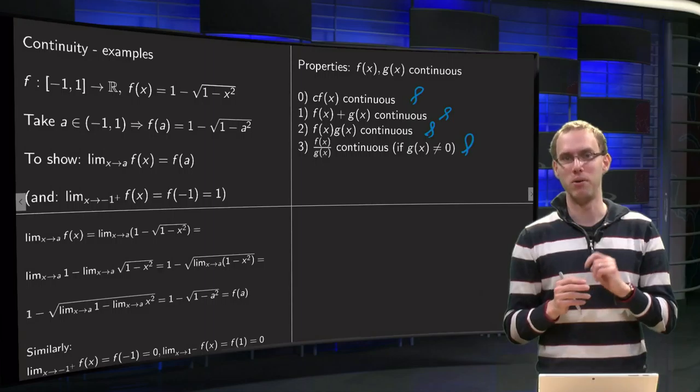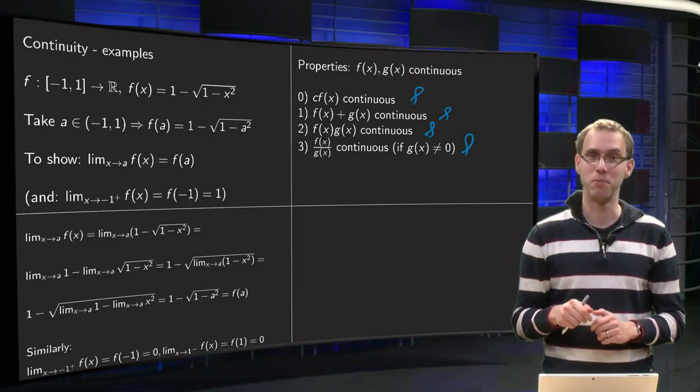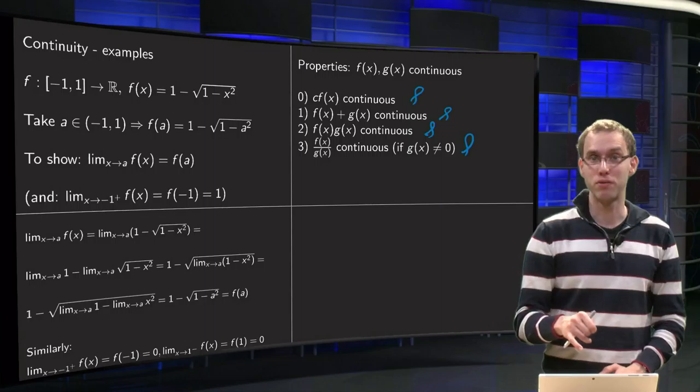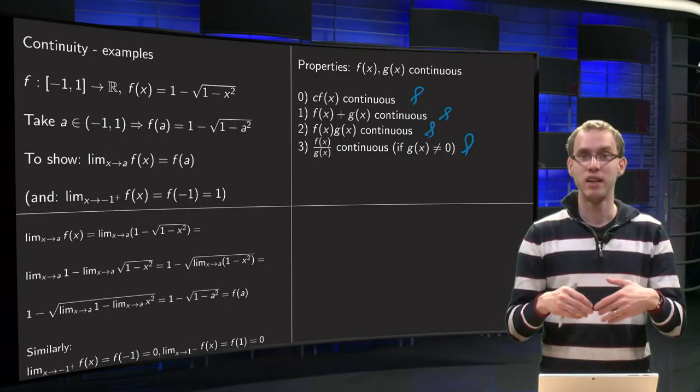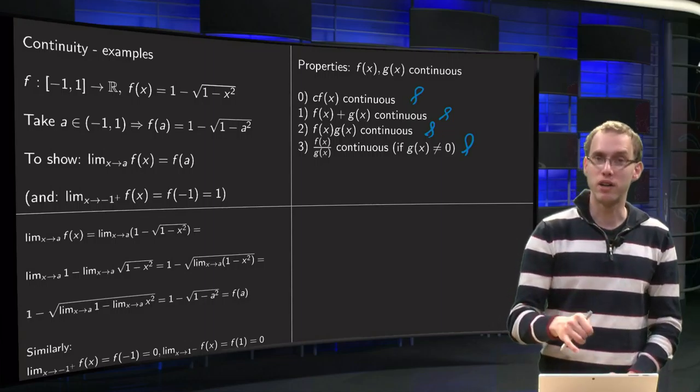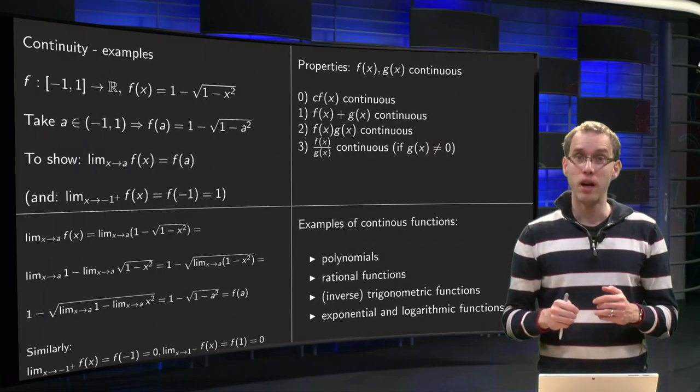We inherit the product rule: if f and g are continuous, then the product f times g is continuous. And we inherit the quotient rule also from our limits: if f and g are continuous, then the quotient is also continuous at points where g is not equal to 0. That is why you have to be careful.